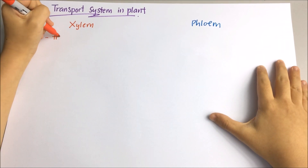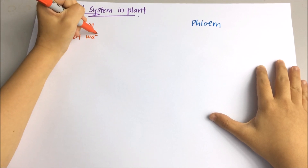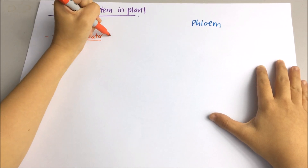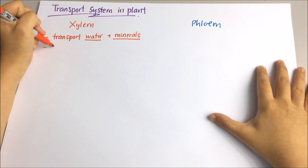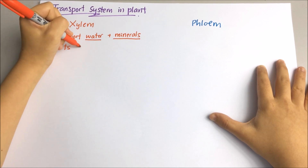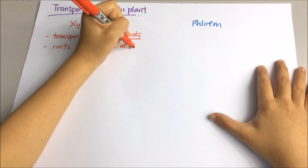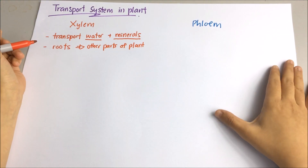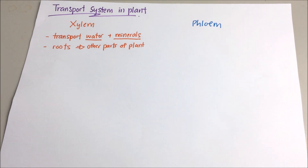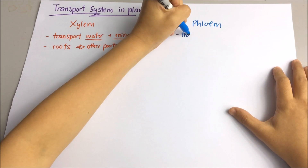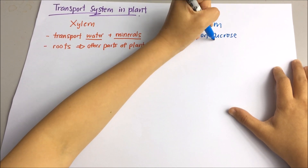Xylem is the tube that transports water and minerals from the roots to other parts of plants. Phloem functions to move the sucrose and amino acids from the leaves to other parts of plants.